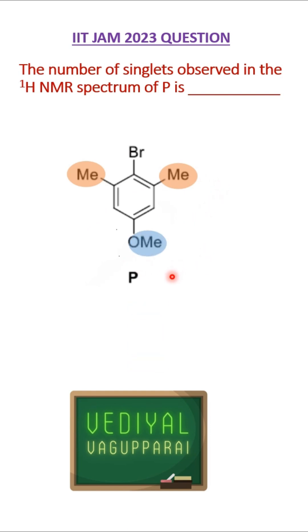Then we have the methoxy group which is different, so we will have the second signal. Then the two aromatic protons will contribute to the third signal. So all together there are three signals or three different types of protons in this molecule.